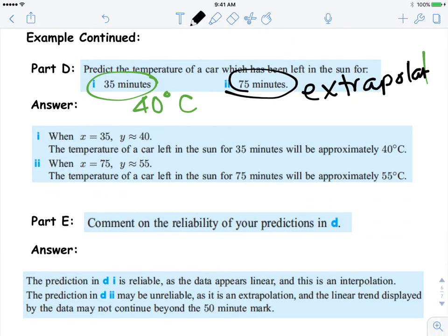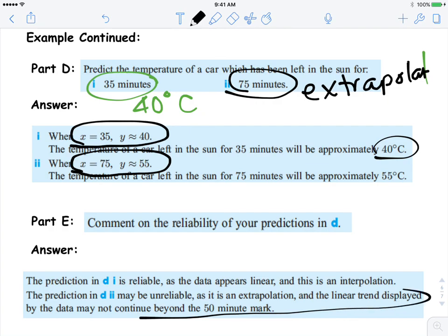So the answers are shown below here. When your x value is 35, your y value is 40, so the temperature in the car left in the sun for 35 minutes will be 40 degrees. Whereas when you went to 75, you can't make a prediction because it's considered outside the poles. So this is considered unreliable due to extrapolation.